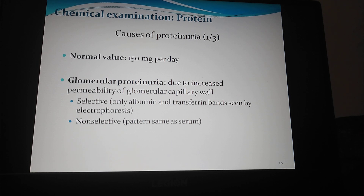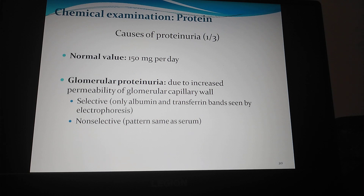Glomerular proteinuria. Proteinuria due to increased permeability of the glomerular capillary wall is called glomerular proteinuria. Selective and non-selective proteinuria can be distinguished by urine protein electrophoresis. In selective proteinuria, albumin and transferrin bands are seen, while in non-selective type, the pattern resembles that of serum.